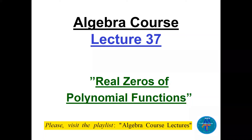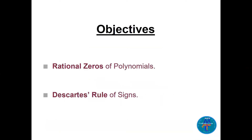Welcome, my friends. This is lecture 37 of the algebra course on real zeros of polynomial functions. There are two ideas in the objectives: finding the rational zeros and discussing Descartes' rule of signs.